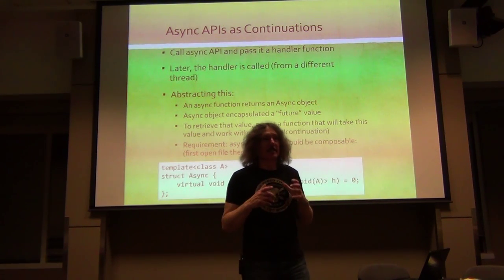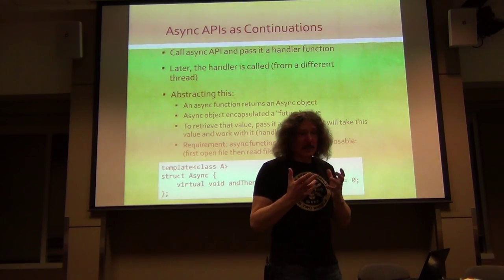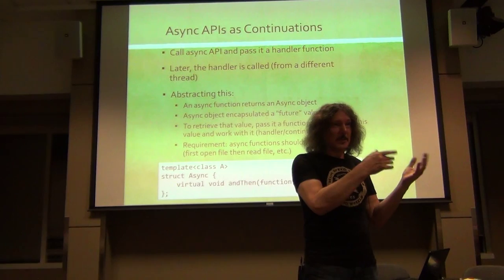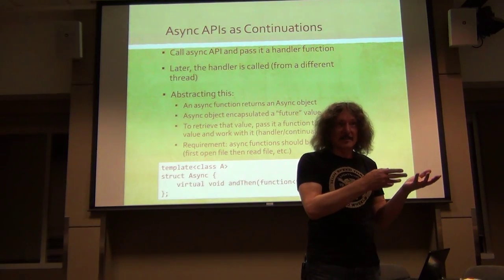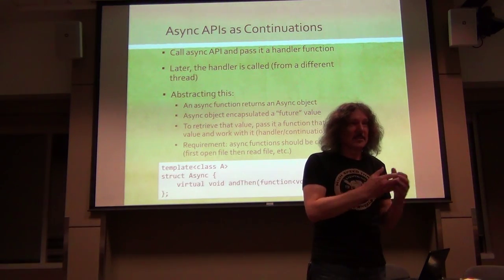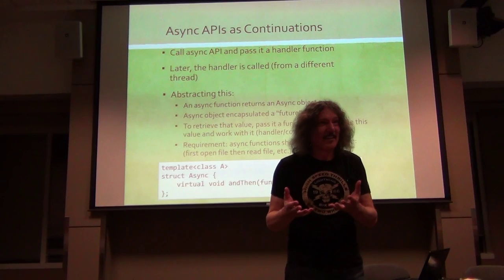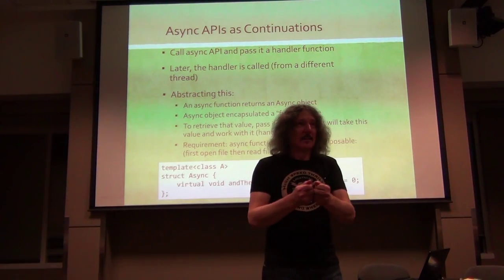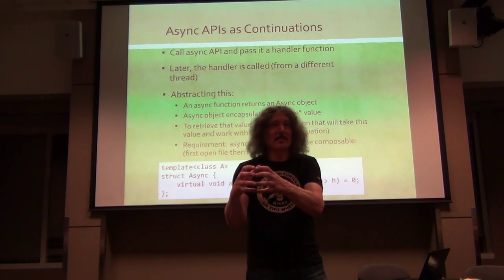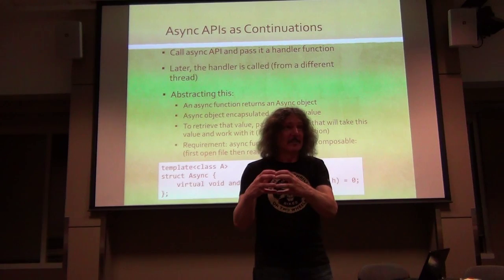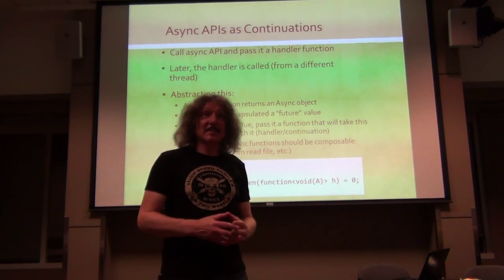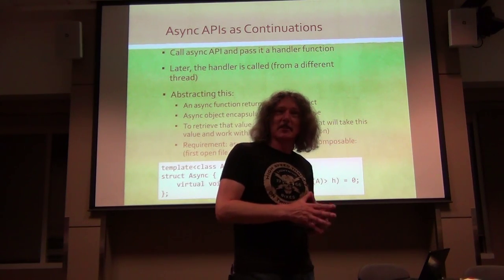The async object encapsulates this value that normally would be returned by the asynchronous function, but since the function is asynchronous, the value is not there yet. So it's like: I owe you the thing. It gives you this box and says, really, there is a value there - trust me. And at some point, this value will actually appear there.